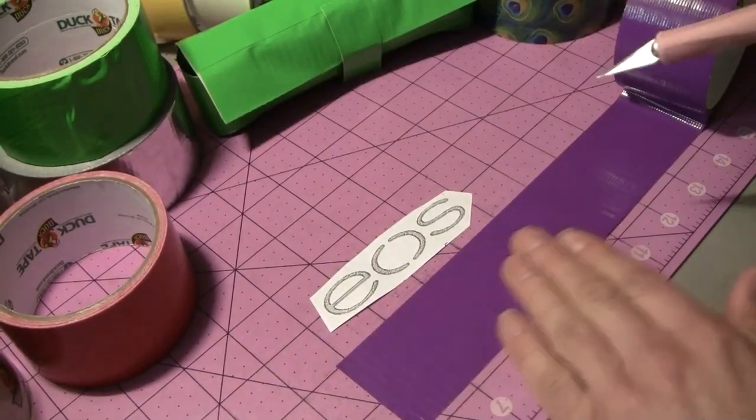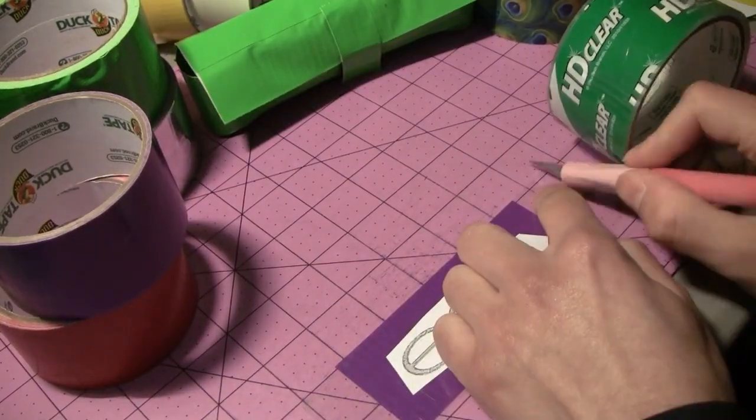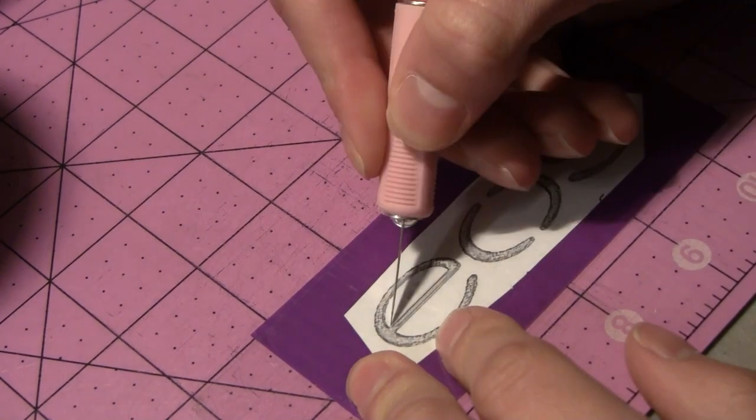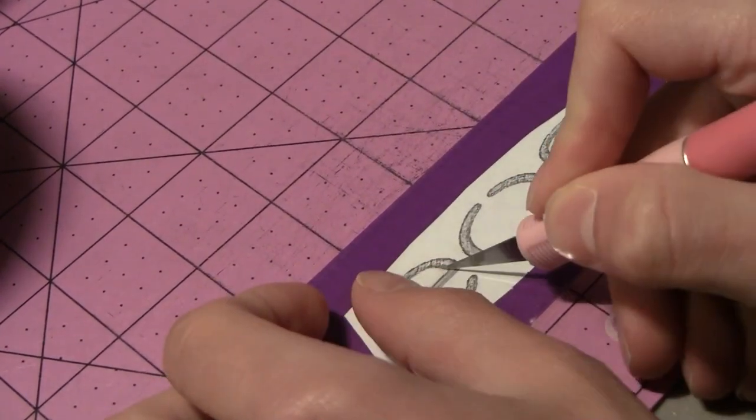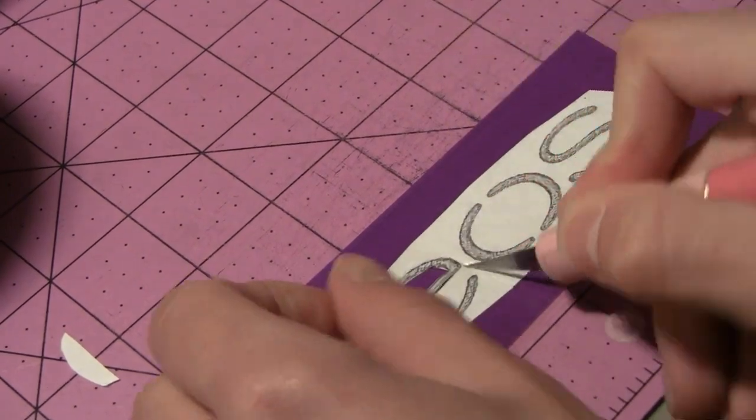So here's the EOS logo. I'm going to stick that right directly on top here because they're all made by EOS, so it makes sense. Zoom in a little bit and use my hobby knife to cut out the logo. Then of course, I'm just going to stick this right on top.